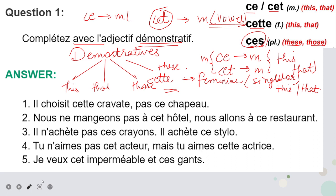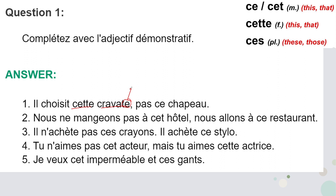So 'il a une ___ cravate' — cravate is with an 'e', that means it's feminine. With feminine we use 'cette'. So that's why we write 'cette'. Next, '___ chapeau' — chapeau is masculine, and if you see carefully there is no vowel sound, so we are going to use 'ce'. That's why 'ce' will come here.